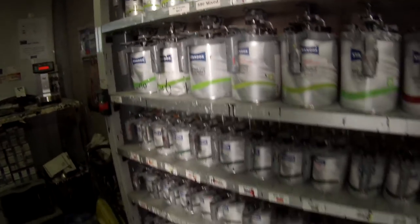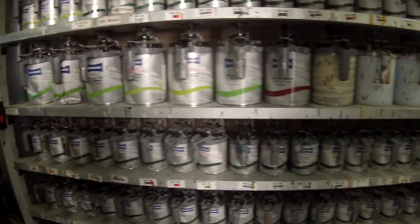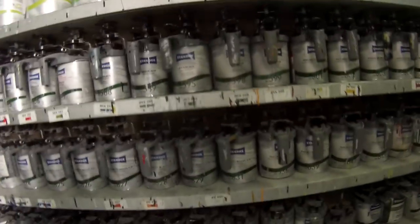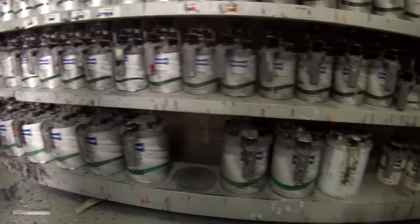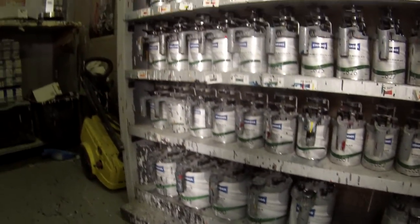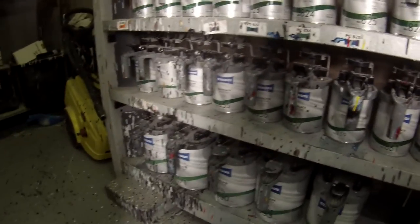At the top we have the low VOC 2K top coat, otherwise known as direct gloss. In these cans with the darker green labels, we've got the Standox Basis Lac, which is a solvent base coat in the Standox range.